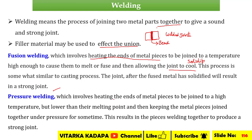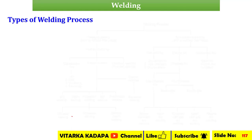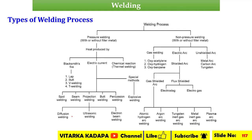The next type is pressure welding. Pressure welding involves heating the ends of the metal pieces to be joined at a high temperature, but lower than the melting point, and then keeping the metal pieces joined together under pressure for some time. This results in the pieces welding together to produce a strong joint. These are the two categories of welding.